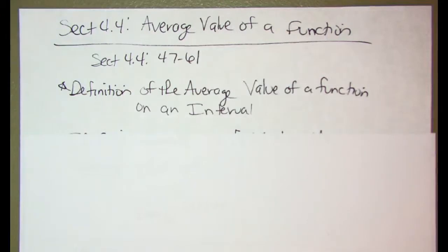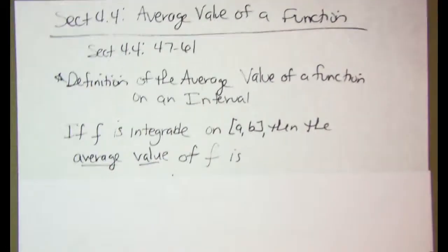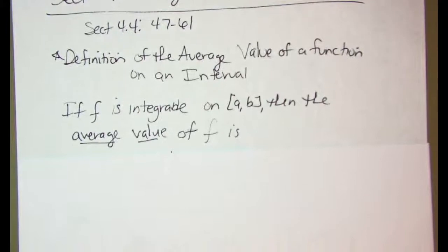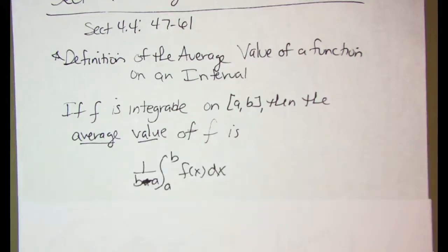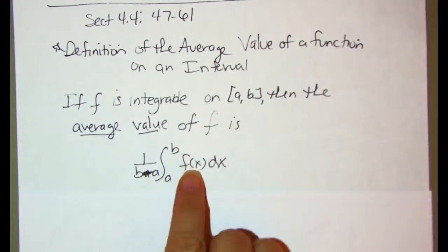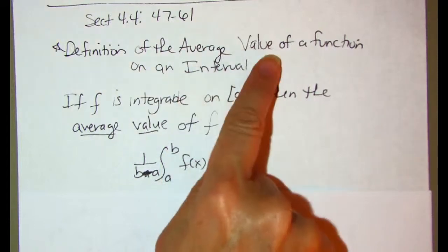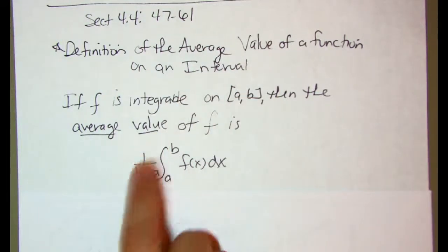So let's talk about the definition of the average value of a function on an interval. If f is integrable on the closed interval from a to b, then the average value of f is this right here. In other words, here is our function that we're going to integrate from a to b, but for the average value, what we do differently than what we've been doing, it's 1 over b minus a.